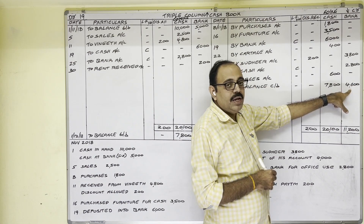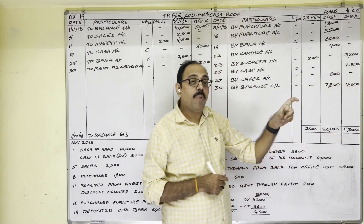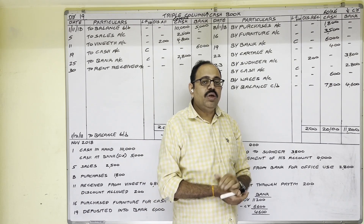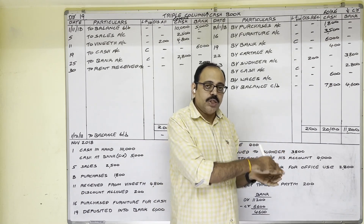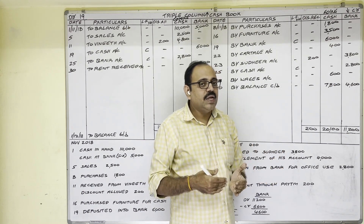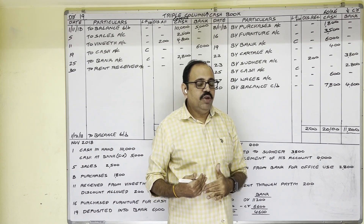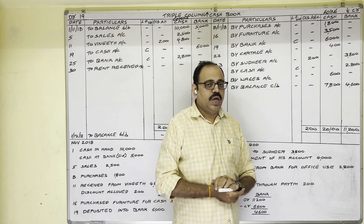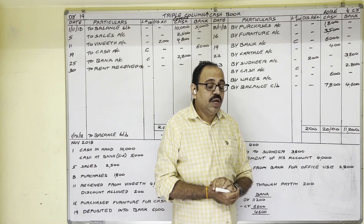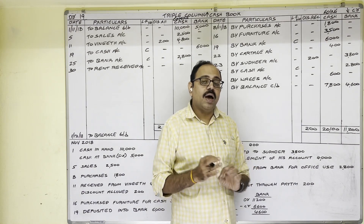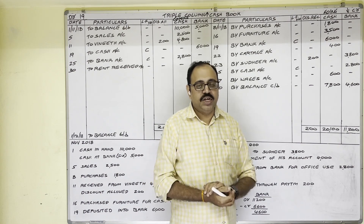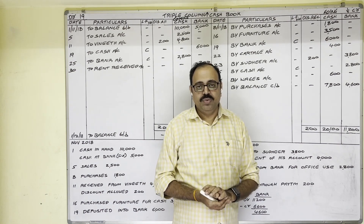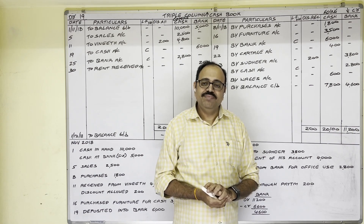We compare this cash book bank balance with the balance in the passbook prepared by the bank. If the bank balance as per the passbook and the bank balance as per the cash book are the same on 30th November 2018, then it is fine. If both are not the same, we have to prepare a BRS — Bank Reconciliation Statement — which is another lesson. This is the end of the present video. Hope this video is helpful to you. Thank you.